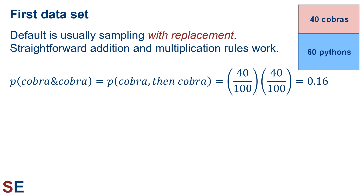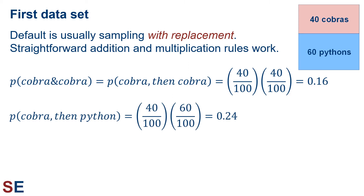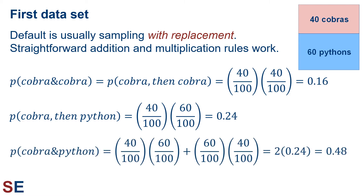As we saw, the probability of choosing two cobras was 0.16 using sampling with replacement. We can also think about the probability of choosing a cobra then a python, which assuming sampling with replacement would be 0.24. The probability of choosing two snakes and getting a cobra then a python is different from the probability of choosing two snakes and getting a cobra and a python in any order. If we want to calculate the probability of cobra and python in any order, we need to think about the two different ways this can occur — cobra then python, or python then cobra — so we have to calculate those two probabilities and add them.